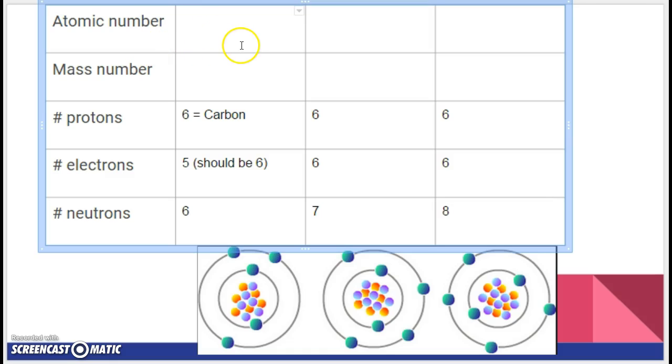The atomic number of all carbon atoms is always what? Six, because it's the number of protons. The mass number. How do I get the mass number? Protons weigh how much? One AMU. Electrons weigh how much? Zero AMU. Neutrons weigh how much? One AMU. So what do I add up to get the total mass? I add the protons plus the neutrons. So six plus six is 12. Six plus seven, 13. Six plus eight is 14.